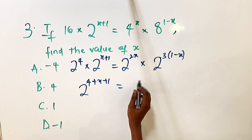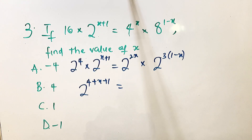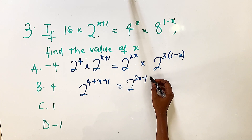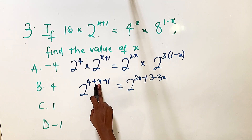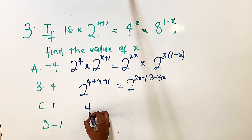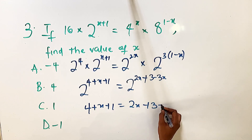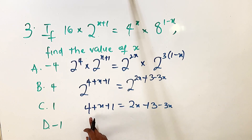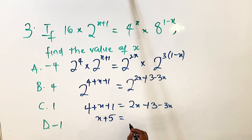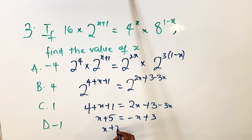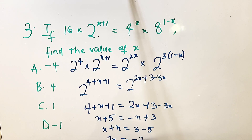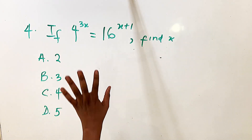Adding powers on the left side: 4 plus x plus 1. On the right side: 2x plus 3 minus 3x, which simplifies to minus x plus 3. Equating the powers: 4 plus x plus 1 equals 2x minus 3x plus 3, so x plus 5 equals minus x plus 3. Bringing x over: 2x equals 3 minus 5, which is minus 2. Dividing by 2: x equals minus 1, so the answer is D.